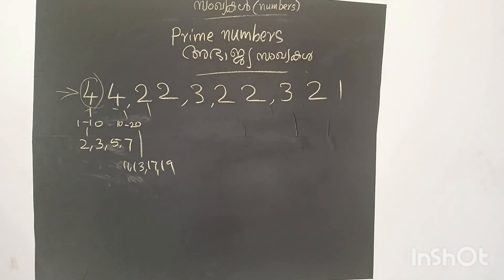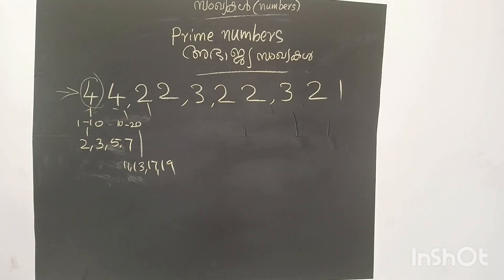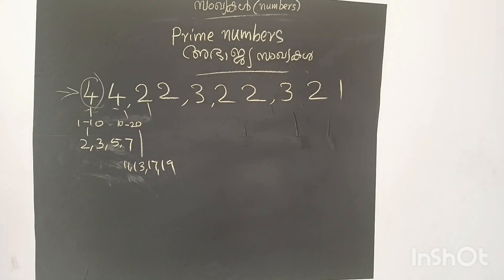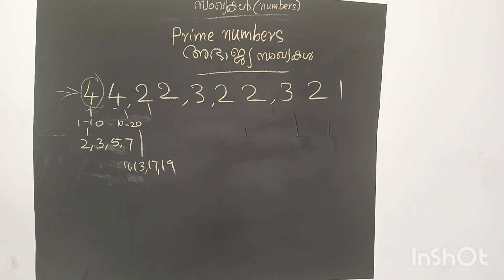Then 60 to 70: 2 numbers — 61, 67. Then 70 to 80: 3 numbers — 71, 73, 79. Then 80 to 90: 2 numbers — 83, 89. Then 90 to 100: 97. In this range, 92 to 100, I will show you the number.